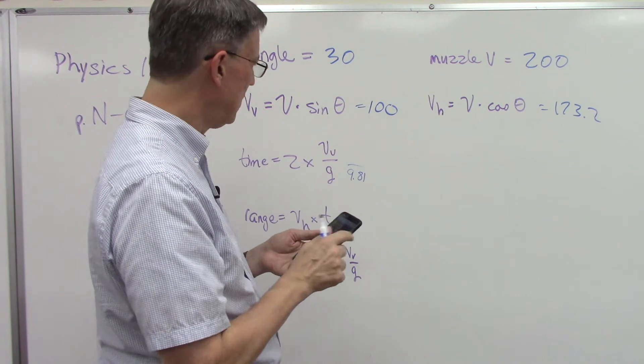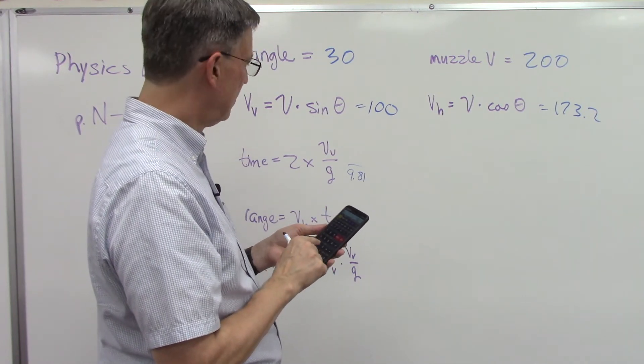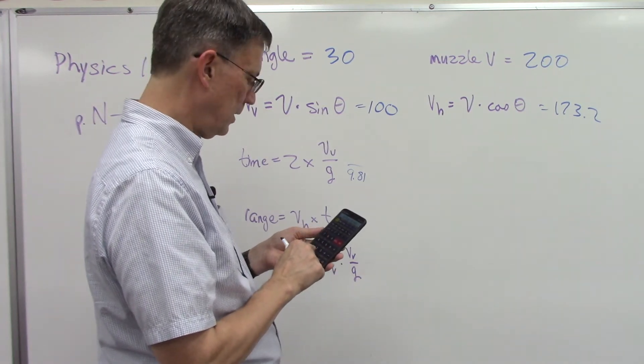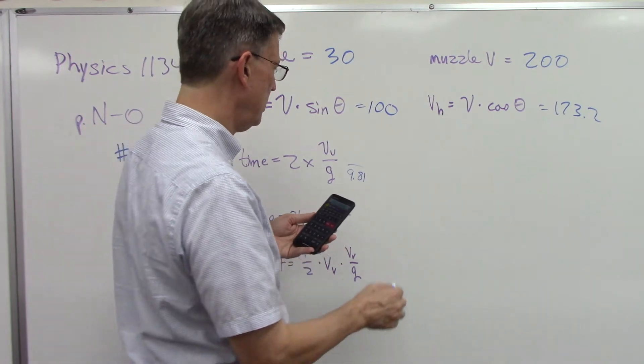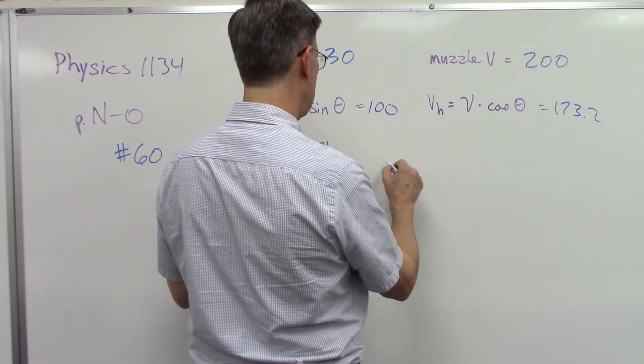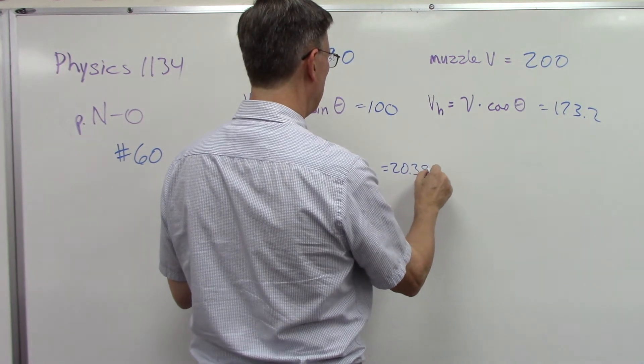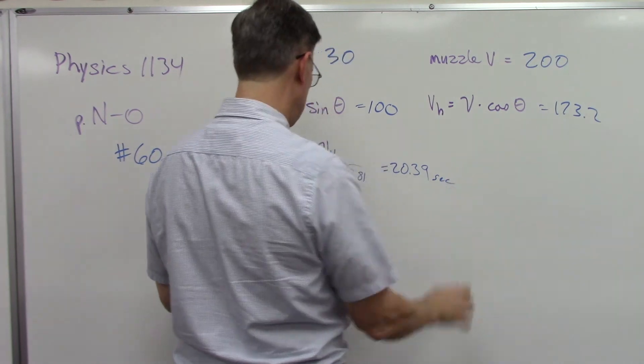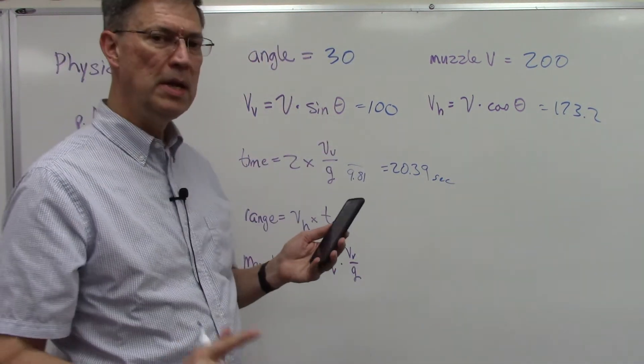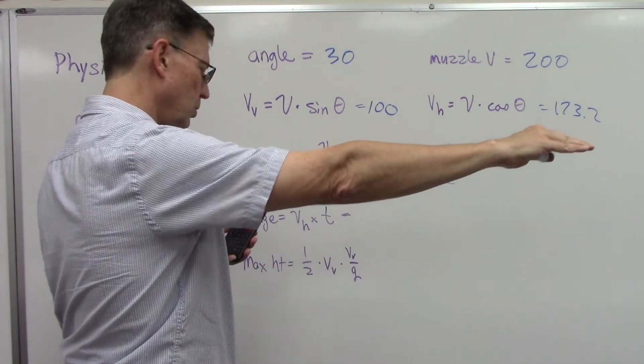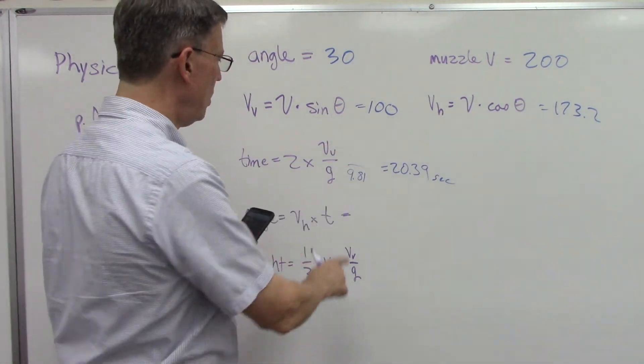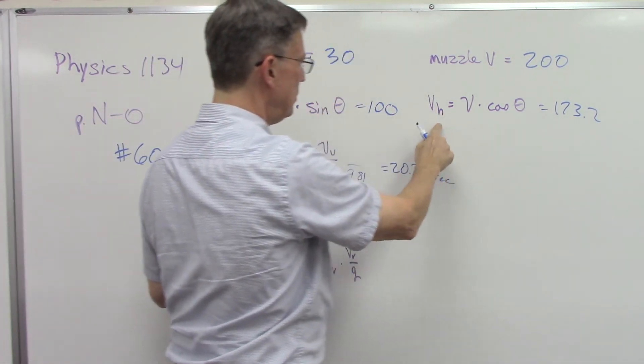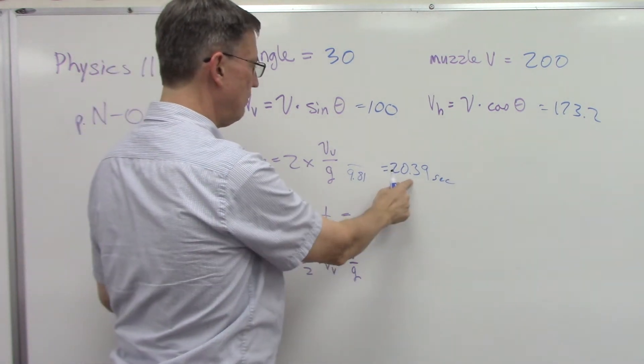If we were doing feet it would be a different number, I think it's 32. But let's take 100 divide by 9.81 and then multiply that answer times 2. So I get 20.39. That's the time, so that would obviously be in seconds. Now to find the range, range is how far in the horizontal does this projectile go. We'll take the Vh which is this number here, Vh times the time, that number right there.